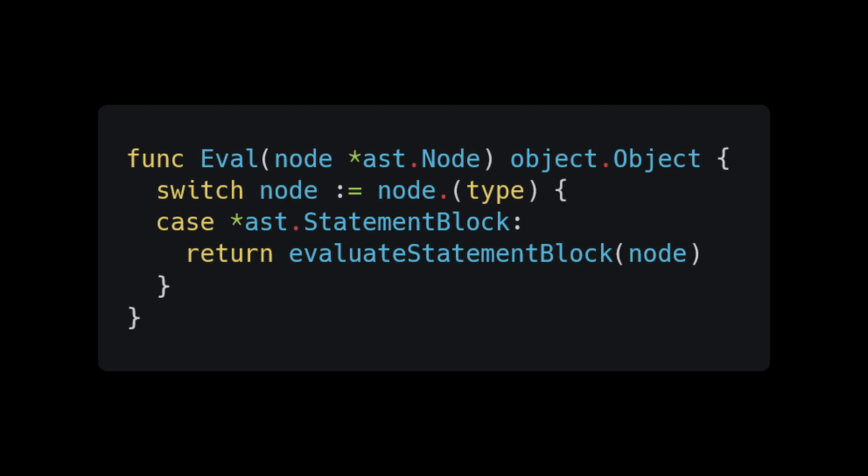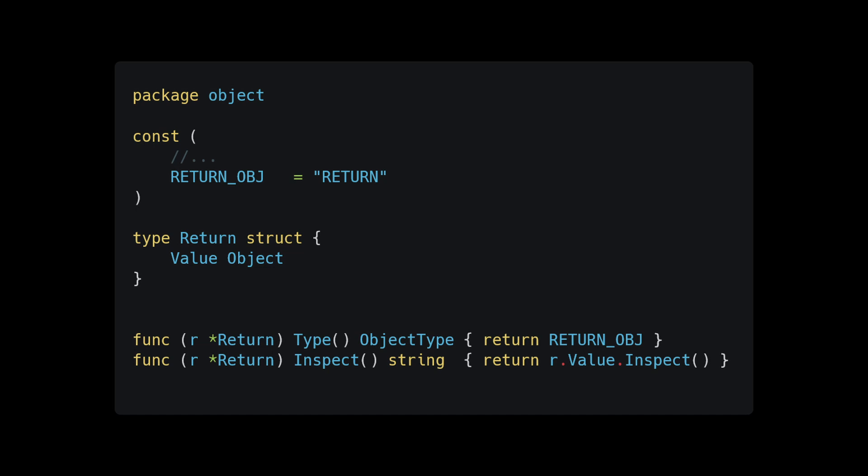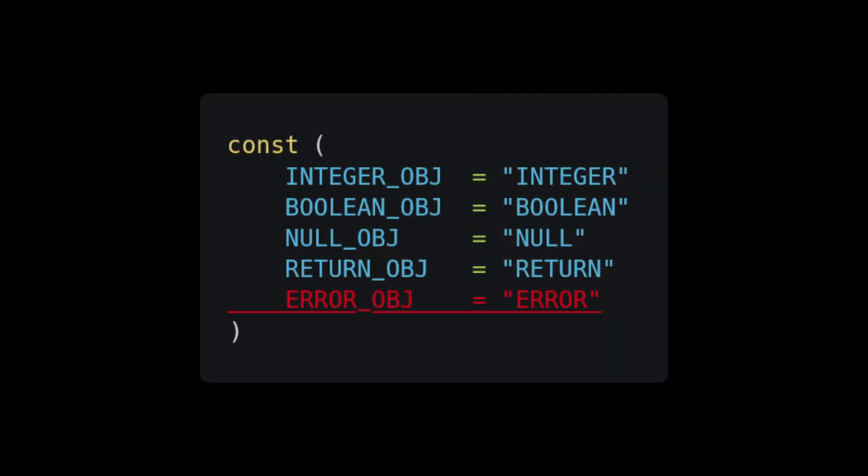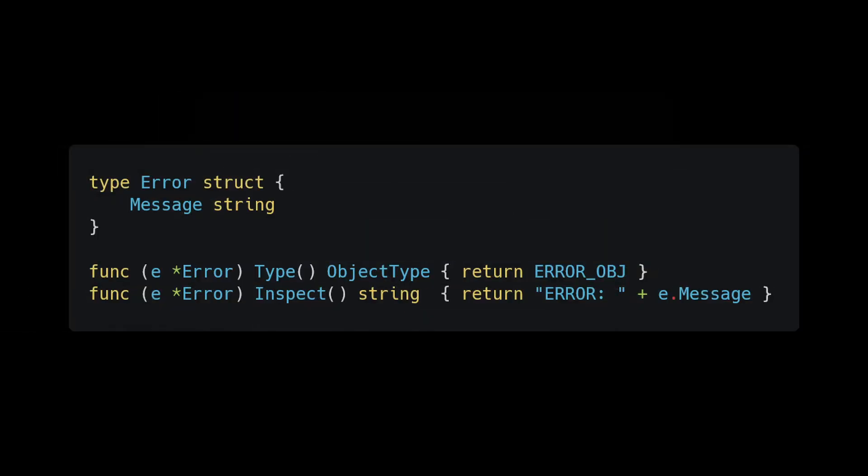Now let's do something that isn't sexy or fun but is necessary — let's add error handling to our evaluator. These aren't user-defined exceptions; this is for when a user has written something wrong, like using the wrong operator or unsupported operations. This is handled a lot like return statements — errors short circuit the evaluation of a block of code. Like return statements, error handling requires us to write an error object. Inside our object package, add the error object type next to its friends.